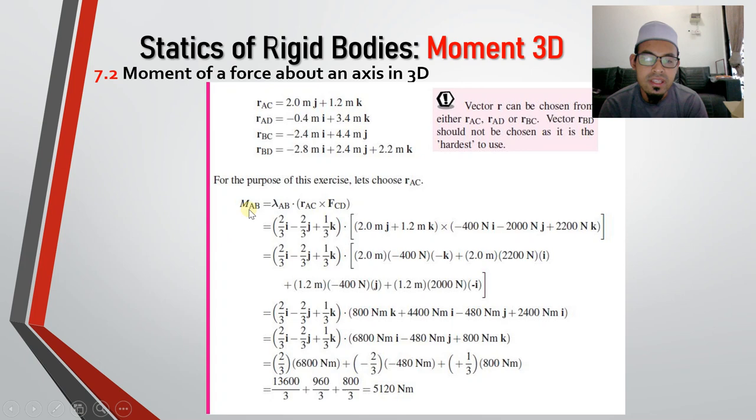So let's say we choose R_AC. So how to find M_AB? M_AB back to our formula, lambda AB dot with R_AC cross with F_CD. This one is basically moment about point A. So just cross product radius cross with F, then we have this moment about point A. Then just if that once we already have moment about point A, then we can dot with lambda AB, then our answer is 45120 Nm.